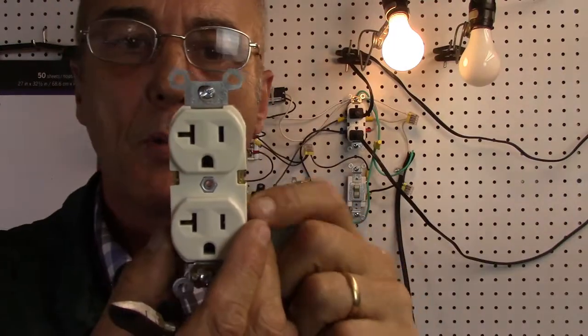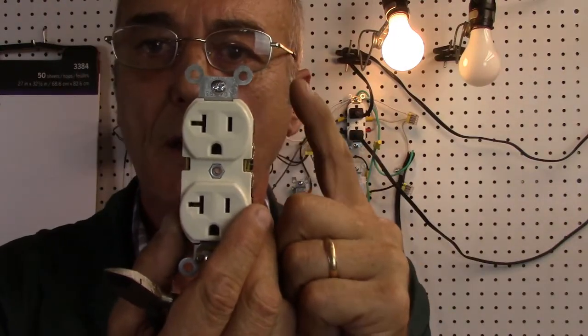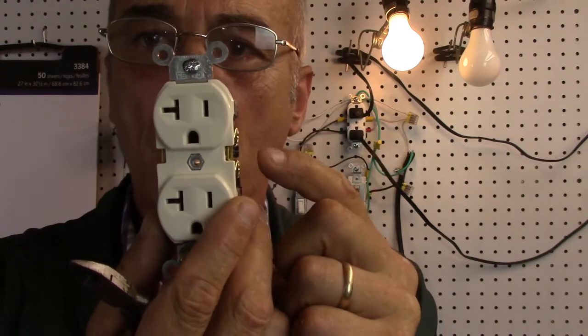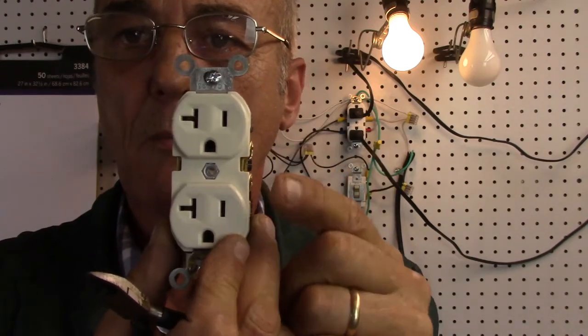So, therefore, when you put a hot wire on the top, it's only going to operate the top receptacle. So, you'd need another hot wire on the bottom screw to operate the bottom receptacle.